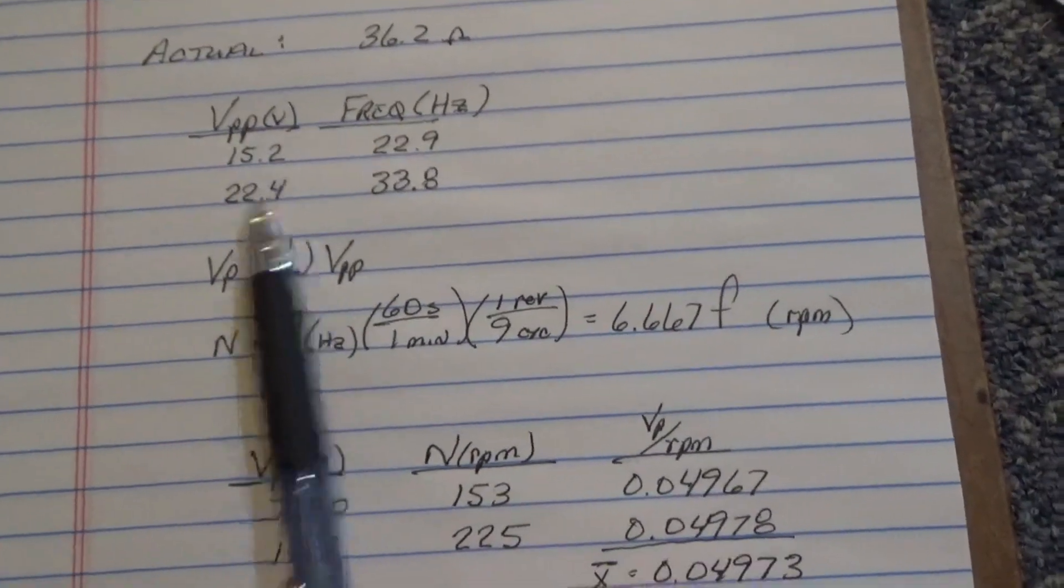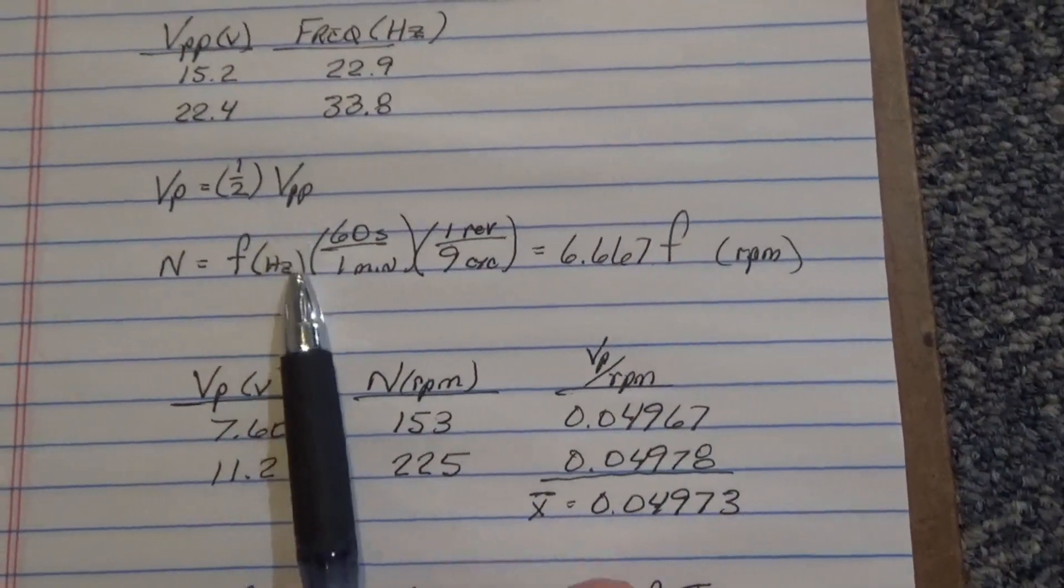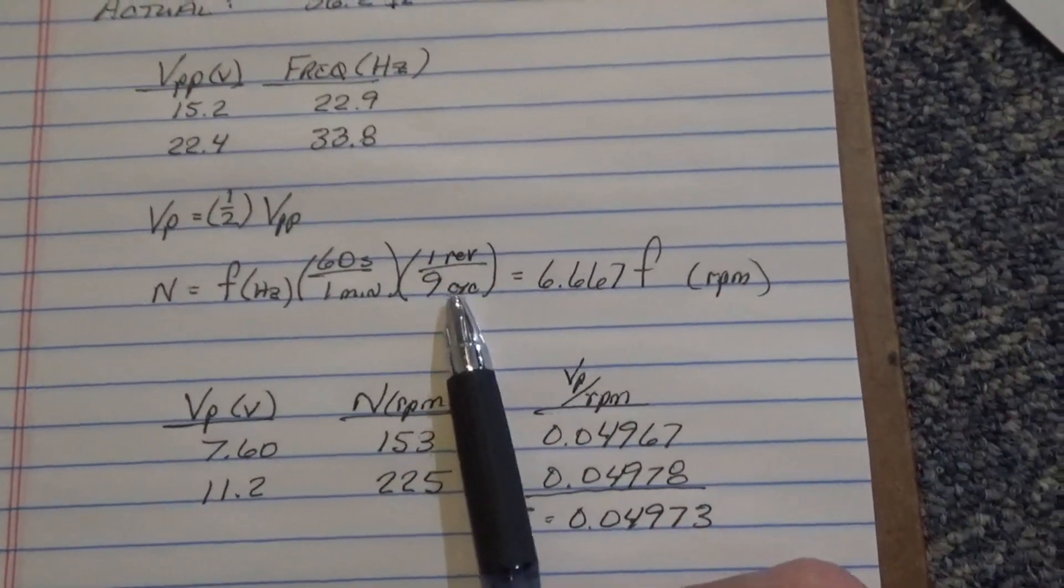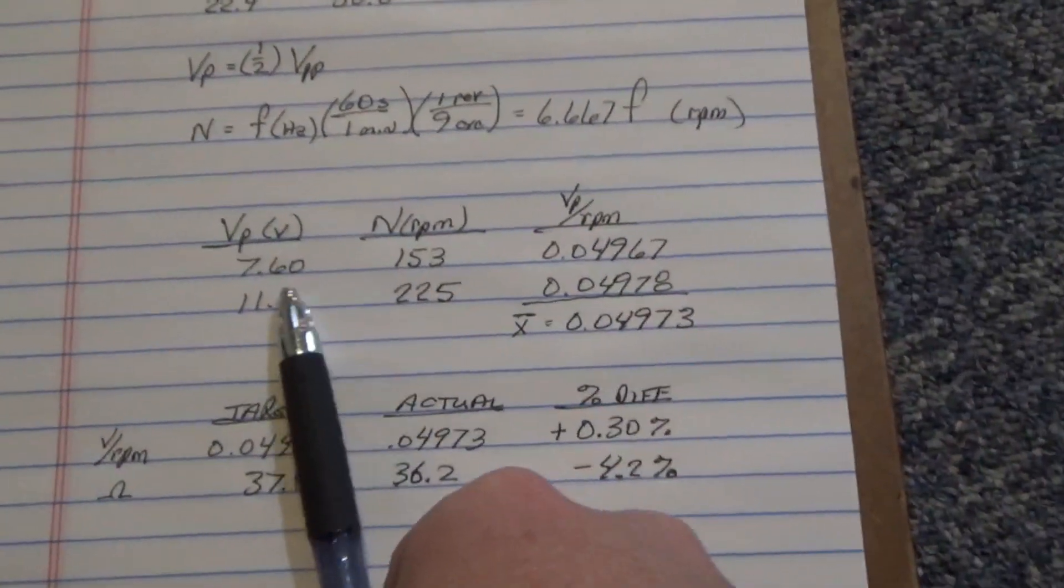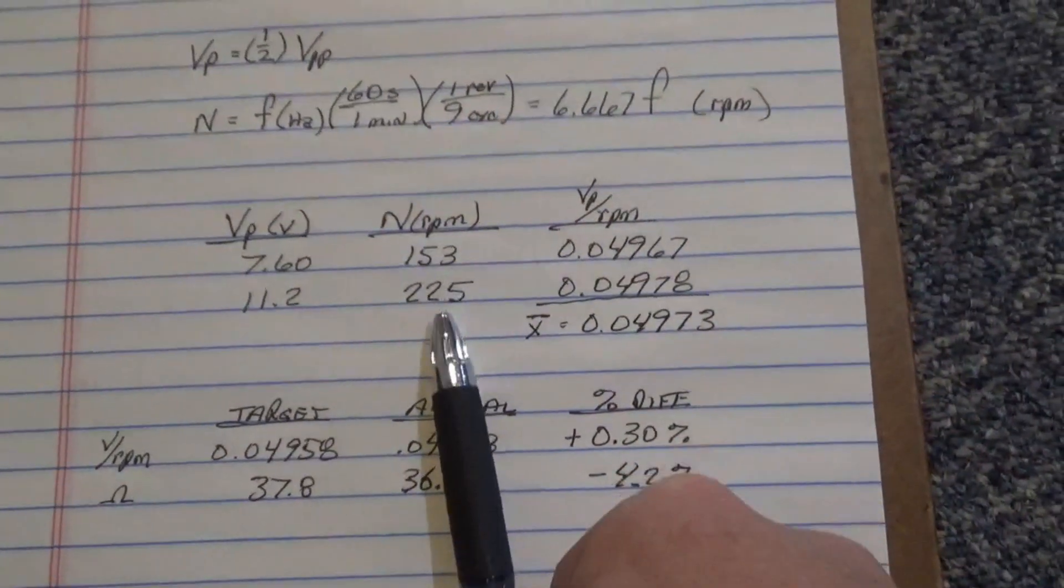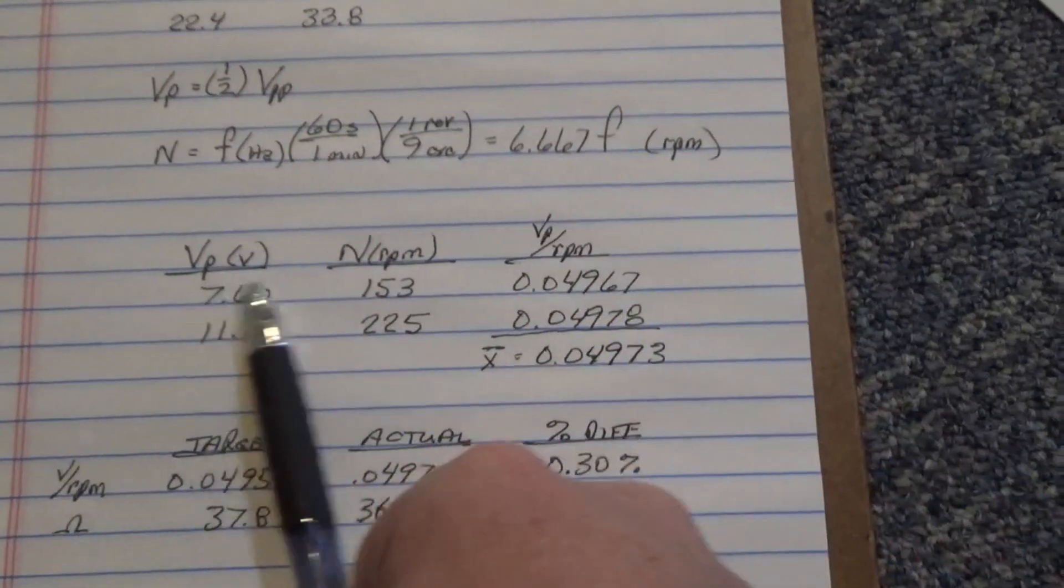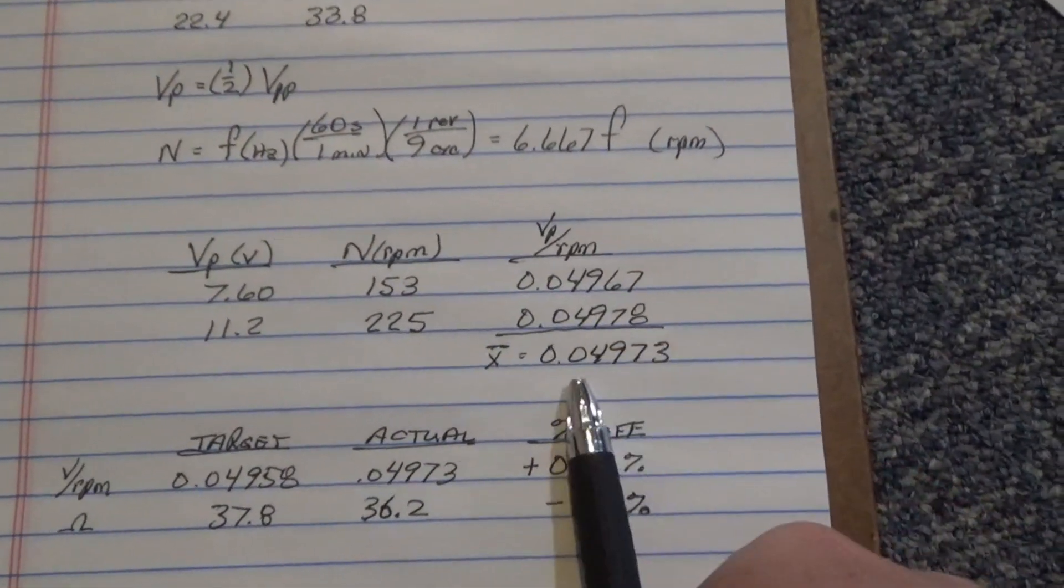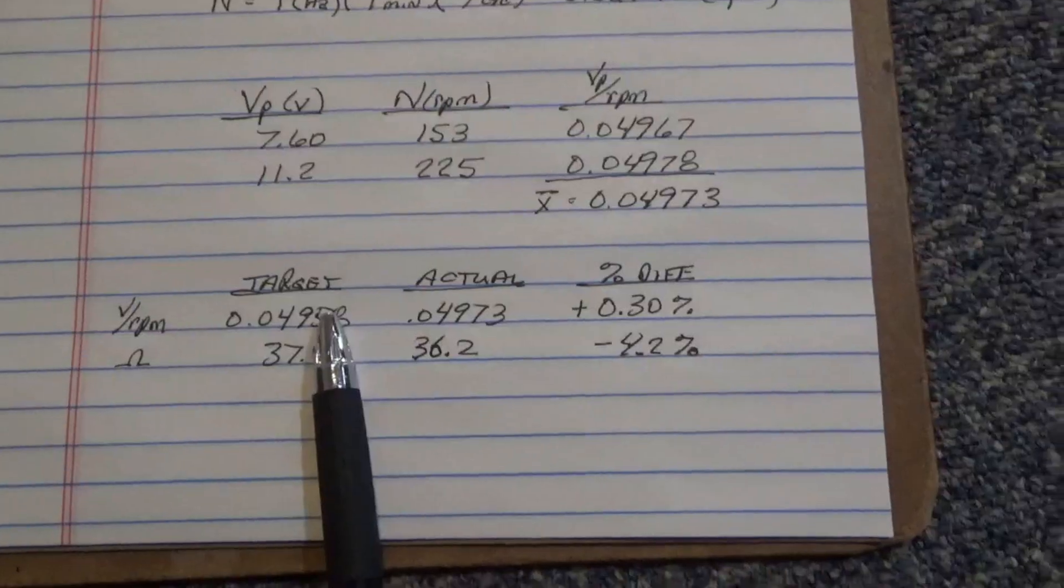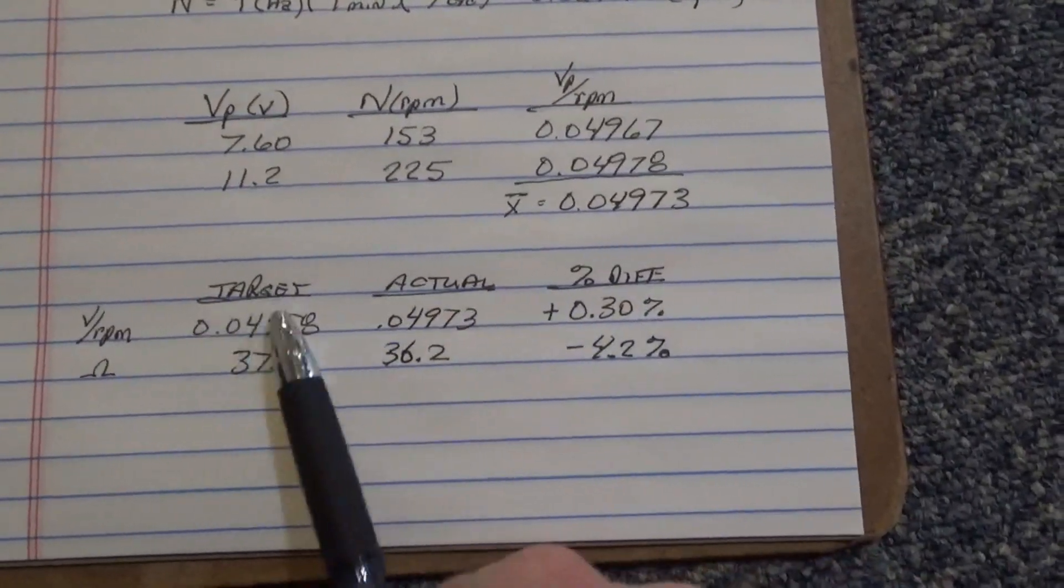So peak voltage is just half that. We can convert from this frequency to RPM. Just take that frequency, which is cycles per second. Convert to cycles per minute. And then there's nine cycles in a revolution. So we divide by nine. And so we can calculate the peak. Just half of those voltages. And then use this for the RPM of the generator. And we get 0.04967 for the one. And then the second run 0.04978. So we have an average of those 0.04973. So if the target was 0.04958, we were just up about 0.3%. So that was, that turned out to be really close.